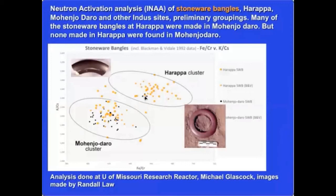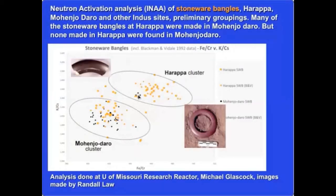Stoneware bangles were also inscribed on the outside in a very small way, done after firing — again not readable from a distance, suggesting specific significance to the wearer but not meant for others to see. Studies of stoneware bangles show that many were made at Mohenjo-daro and traded to Harappa, while none made at Harappa were traded to Mohenjo-daro, indicating directionality of movement of certain commodities during this period.